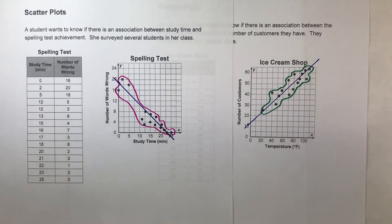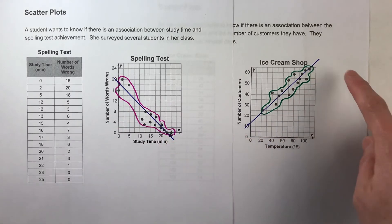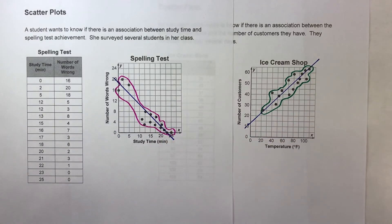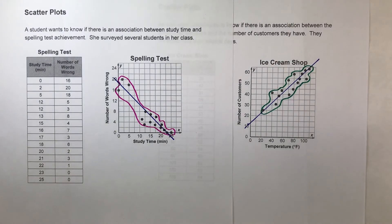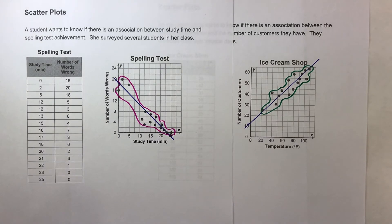And that's how you read a scatter plot, and that's how you use a trend line to make sense of data. Hopefully this video helped you — if it did, make sure you hit that like button and subscribe. I hope this was useful and I hope to see you next time.